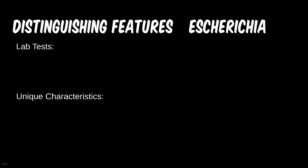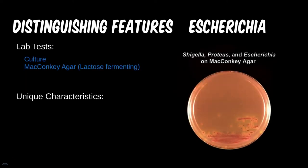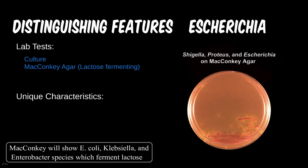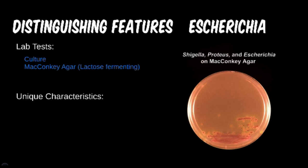E. coli is usually not too difficult to culture. However, with so many gram-negative rods that cause human disease, simply looking under the microscope isn't going to be enough to differentiate this from dozens of other bugs. The MacConkey agar is a specialized agar for lactose-fermenting bacteria. As shown in this image, E. coli is growing at the bottom section of this plate, while Proteus and Shigella were also cultured and do not show on this medium.